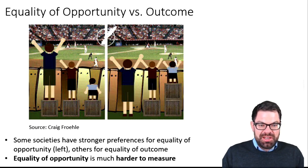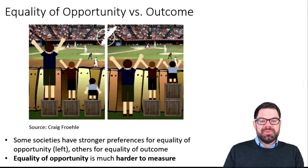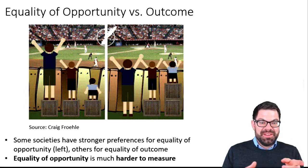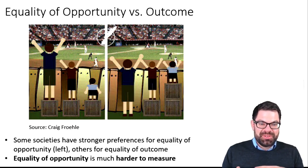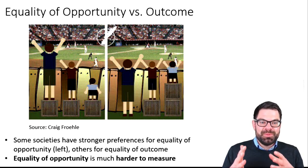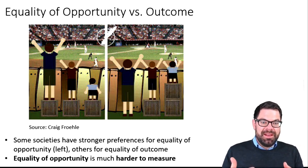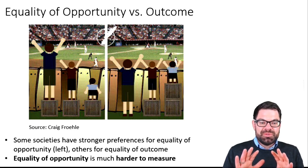Our intuition might say we should always do it the way shown on the right — equality of outcome. But it's not that easy. The complication is that as a government, we don't typically know who among many people is in need of help. The danger is that if we don't know, we end up giving help to a lot of people who don't actually need it, which can be very expensive and lead to further challenges.